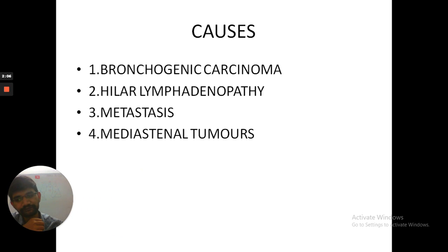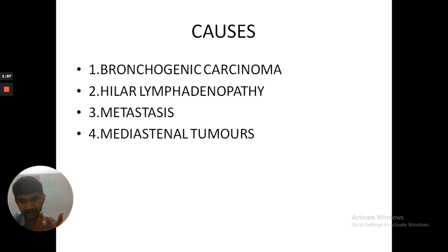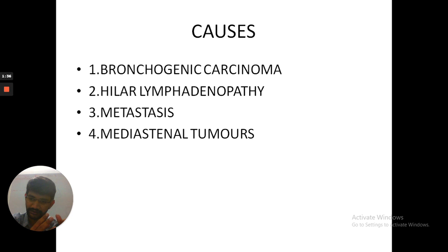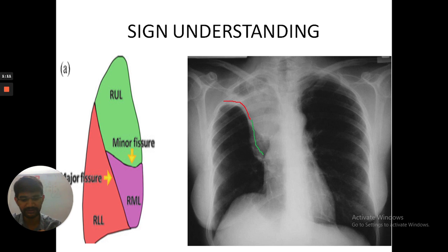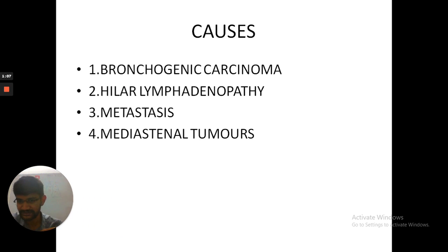The causes of Golden's sign include bronchogenic carcinoma — endobronchial growth causing collapse of the right upper lobe with hilar enlargement. It could also be hilar lymphadenopathy, where obstruction of the right upper lobe bronchus comes from outside, such as in sarcoidosis, tuberculosis, or malignancy. Metastatic lymph nodes causing lymph node enlargement can obstruct the right upper lobe bronchus leading to collapse, as can primary mediastinal tumours causing right upper lobe collapse and Golden's sign.